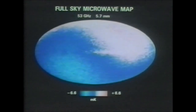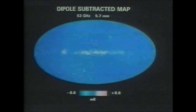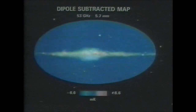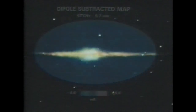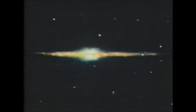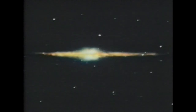If you take away the dipole anisotropy, the only thing you see in the picture is the galaxy. Looking down at a level more than ten thousand times the original intensity, there are no fluctuations — and that's getting to be a problem.